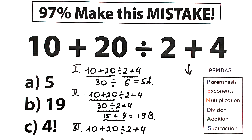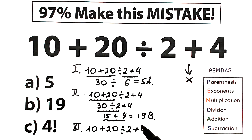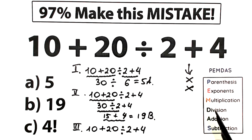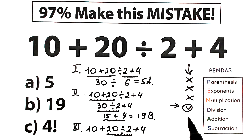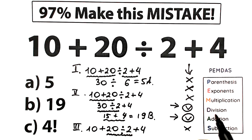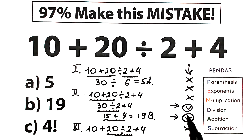Starting with parentheses — I don't see any, so we skip that. Exponents — no squared or cubed terms, so we skip that too. Now the multiplication/division group: we don't have a multiplication sign, but in the middle we have a division sign. After that we have two addition signs. There's no subtraction sign. So we have only division and addition, and in PEMDAS, division always comes before addition — so we divide first, then add.